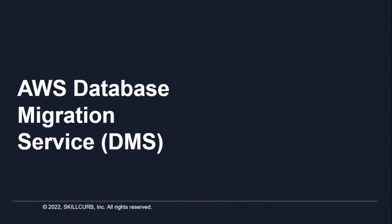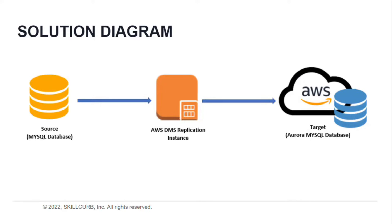Hi, welcome to this lab on AWS Data Migration Service. I am Aliza Tanbir from SkillCorp and in this lab we will learn how to migrate a MySQL database to AWS Aurora MySQL database. The solution will have a source MySQL database and a target Aurora MySQL database, and we will migrate from source to target using the AWS Data Migration Service Replication Instance.